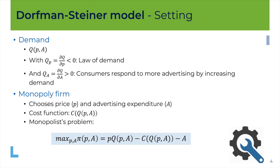The monopoly firm is choosing both the price of the goods and how much to advertise, symbolized by the letter A. It has some cost to produce the goods, C of the quantity produced, and we can write the problem of the monopolist as follows: it is maximizing its profit, which depends on two variables — the price and the level of advertising. The profit has the form: revenue (price times quantity) minus the total cost of production minus the cost of advertising. So A is the advertising expenditure.